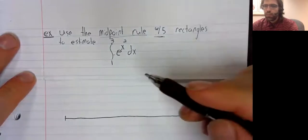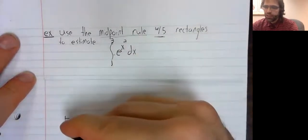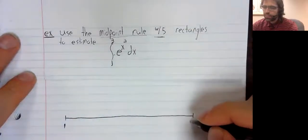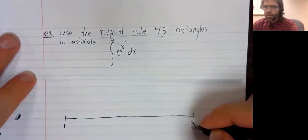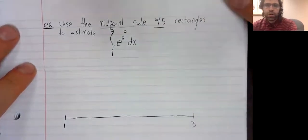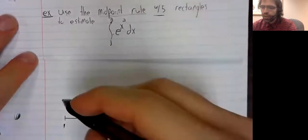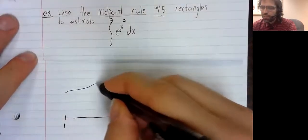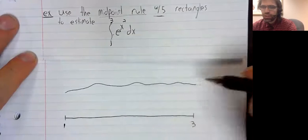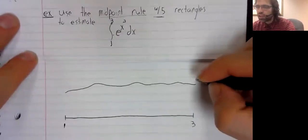So, we're going from one to three. We've got this function. We could graph it on our calculator, but for the purposes of the midpoint rule, it doesn't actually matter what the function looks like.